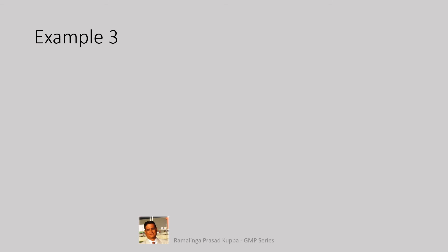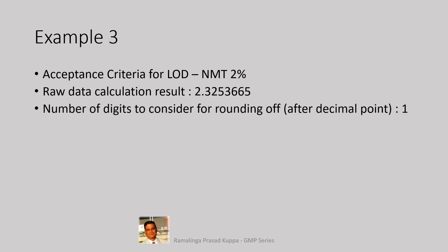Yet, another example 3 for a typical LOD test. The limit is not more than 2%. Please note that the specification does not have any decimal points. Raw data calculation result is 2.3253665. Number of digits to consider for rounding off after the decimal point is 1. Only 1 digit after the decimal point is considered for rounding off. Accordingly, all the 6 digits after the digit 3 are ignored. The result considered for rounding off is 2.3.